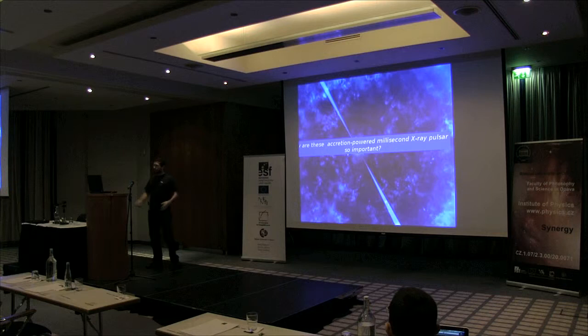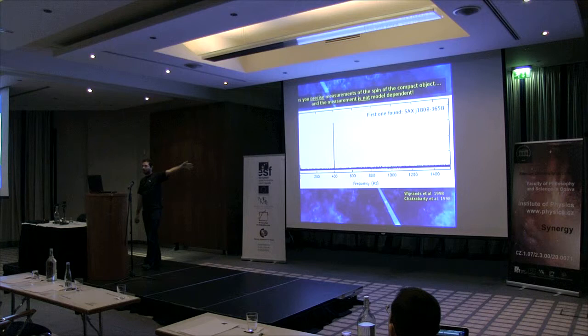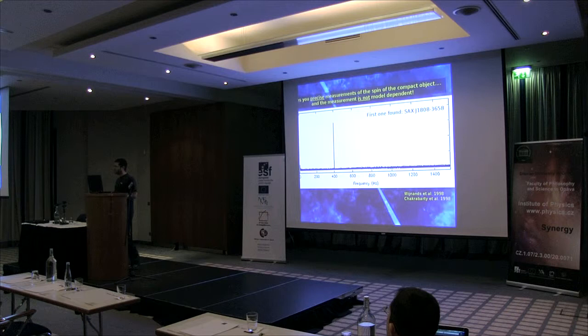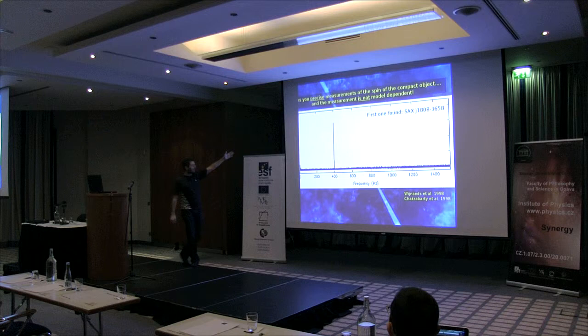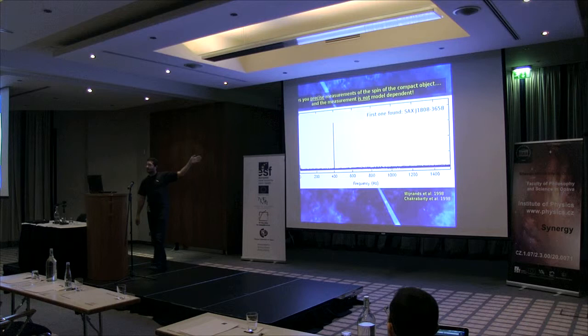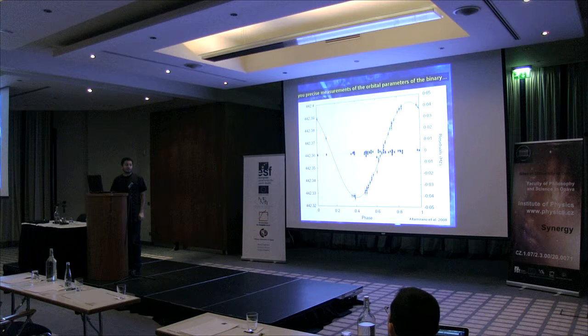The question is why AMXPs are important, particularly for this talk. The main point is that they allow us to measure the spin frequency of the neutron star in a model-independent way. For neutron stars, you observe with an X-ray telescope, make a power spectrum of your data, you get a spike, and the spike is always at the same frequency — in this case 401 Hz. This was the first AMXP discovered in 1998, although they were predicted in the 1980s.